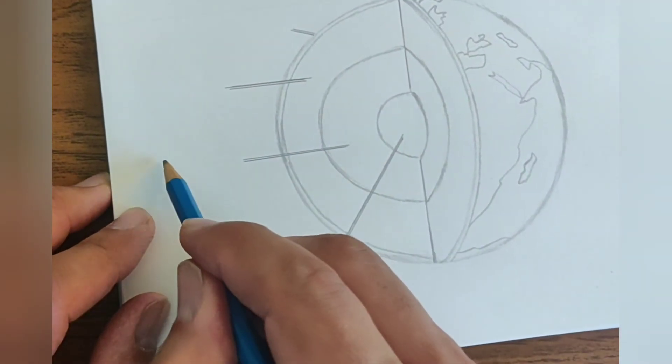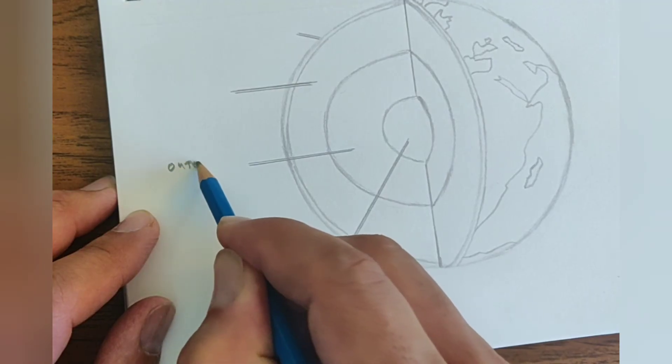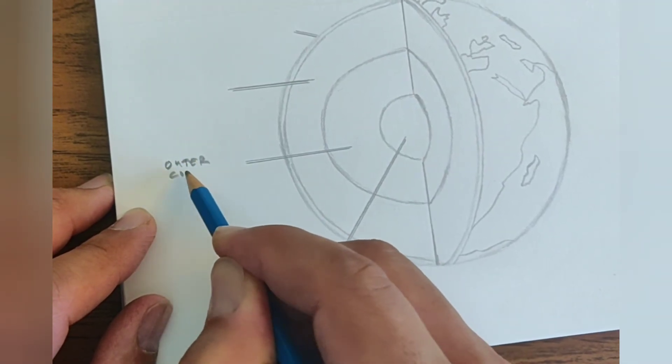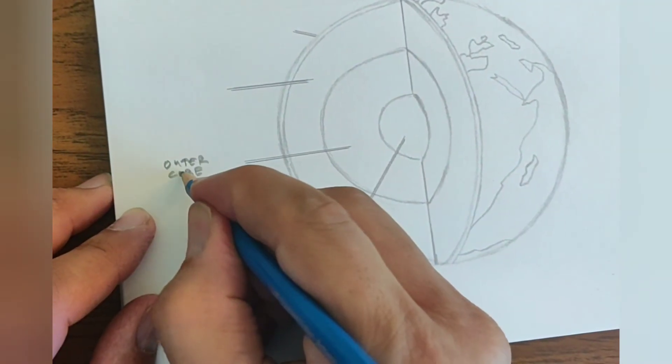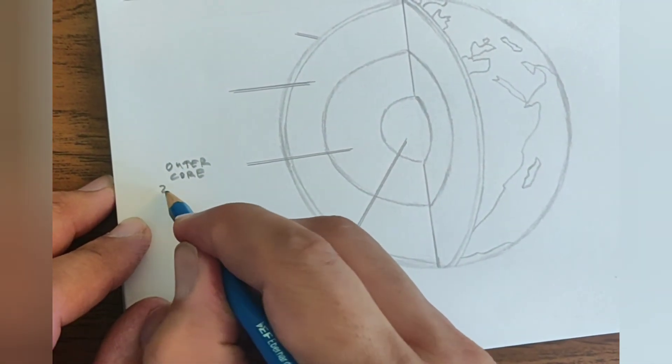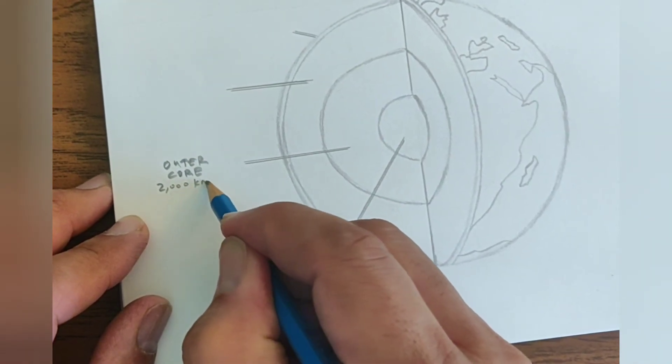This is the outer core, which is 2,000 kilometers thick.